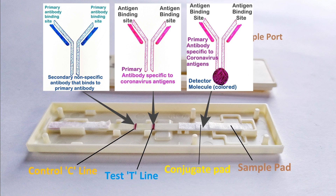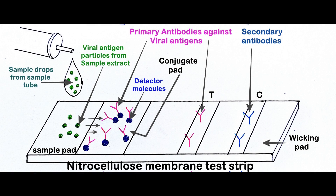The test and control lines are both invisible before the test is performed. The wicking pad is made of absorbent cellulose material and drives the capillary movement of the sample extract across the nitrocellulose test membrane. It also functions as a reservoir for waste liquid that has flowed beyond the membrane strip and prevents backflow.